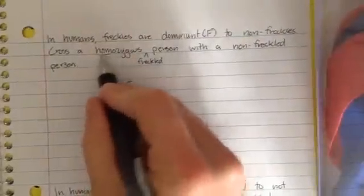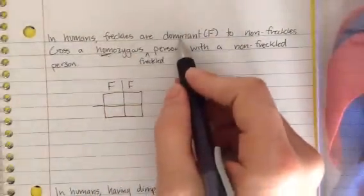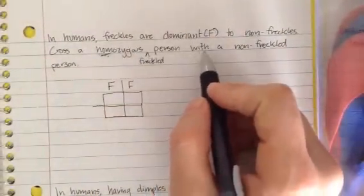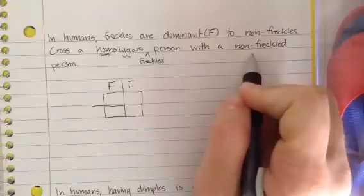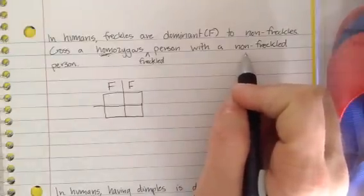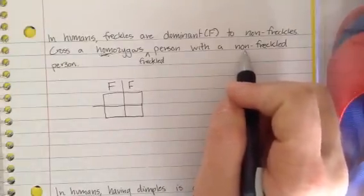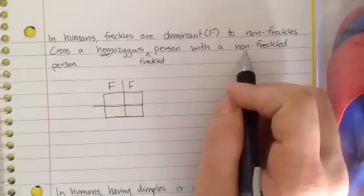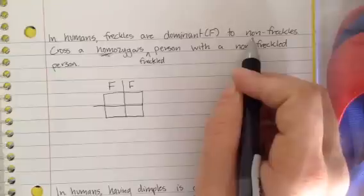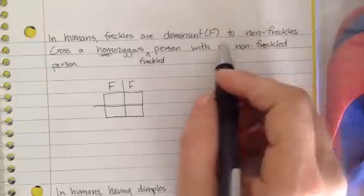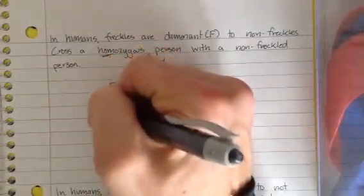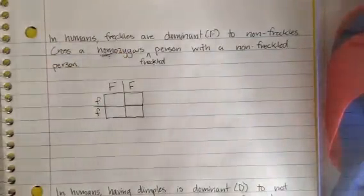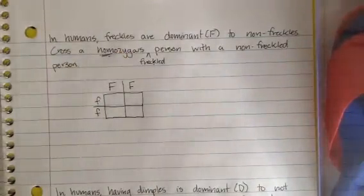Again, homo, same, freckled is dominant. We cross it with a non-freckled person. Now this doesn't say homozygous or heterozygous, and this is not one of my errors. But since we know that non-freckled is recessive, its letters have to be little f, little f.